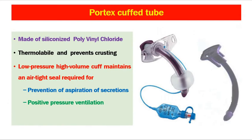Now let's come to the Portex cuffed tracheostomy tube, which is made of siliconized polyvinyl chloride. It is thermolabile — slightly stiff during insertion but becomes more malleable and softer once inside the body — and it prevents crusting. Being a cuffed tube, it can be used as the first tube during tracheostomy, can be used during positive pressure ventilation, prevents aspiration of secretions, and provides an airtight seal for ventilation. The outer part contains a 15 mm connector to be fitted to ventilators.